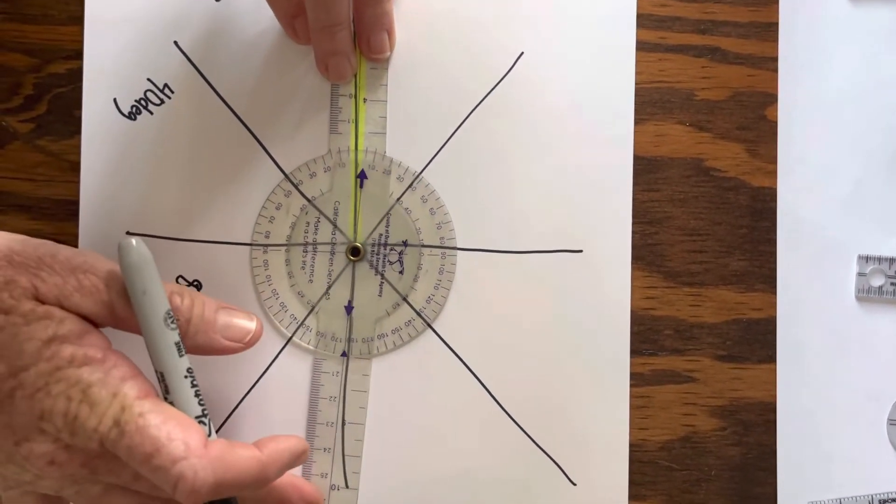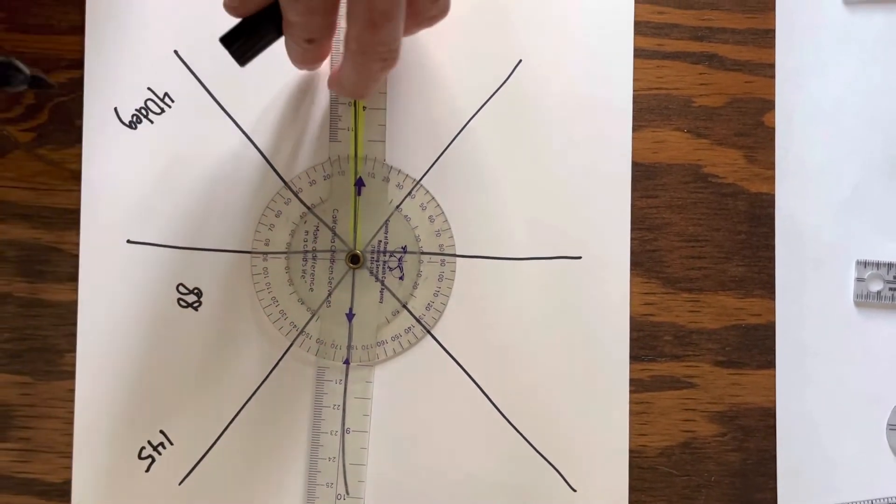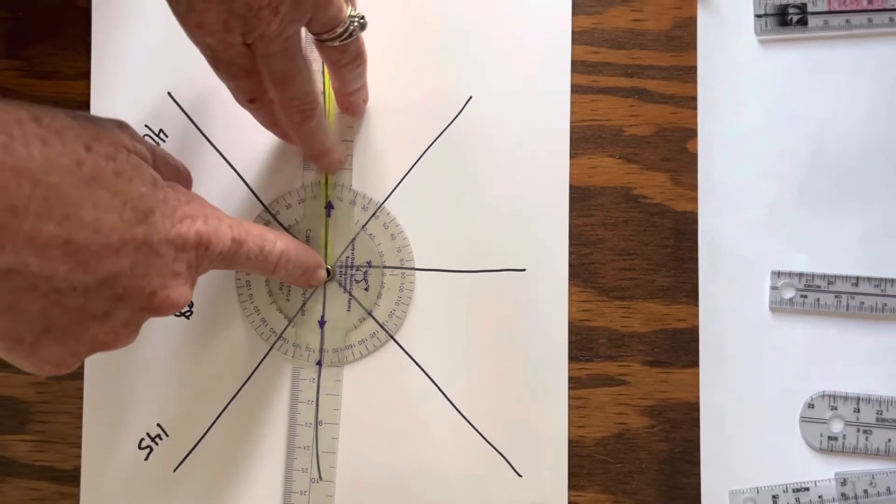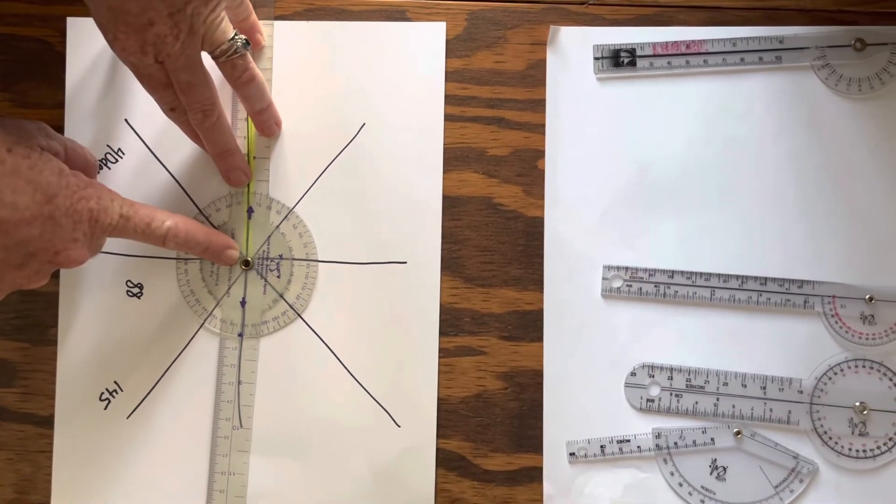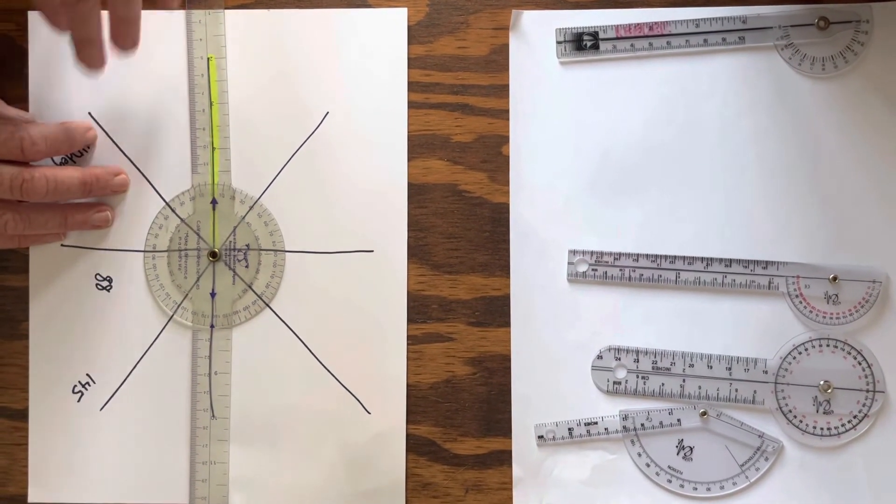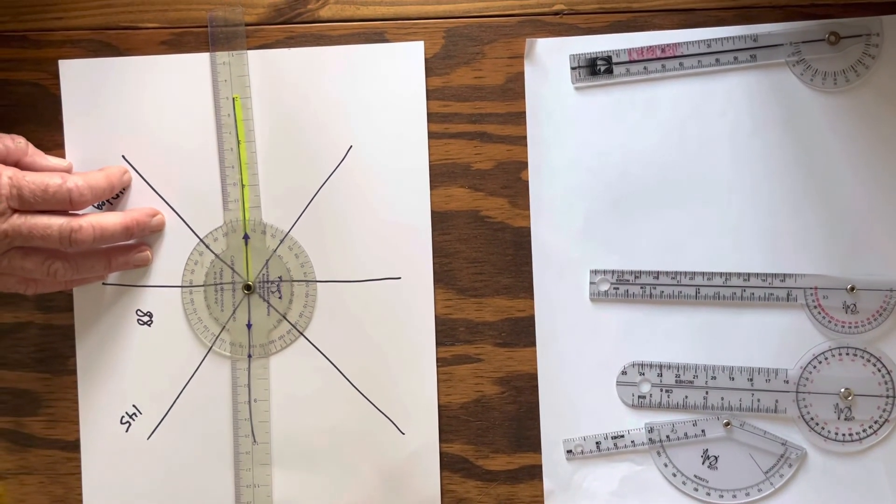And then keep going all the way around. This is just to get you familiar with how to measure with the goniometer, how to move the goniometer, how to hold this steady, and where to put your access point in here. Once you've done this, then you can answer the questions in the discussion board for the assignment.